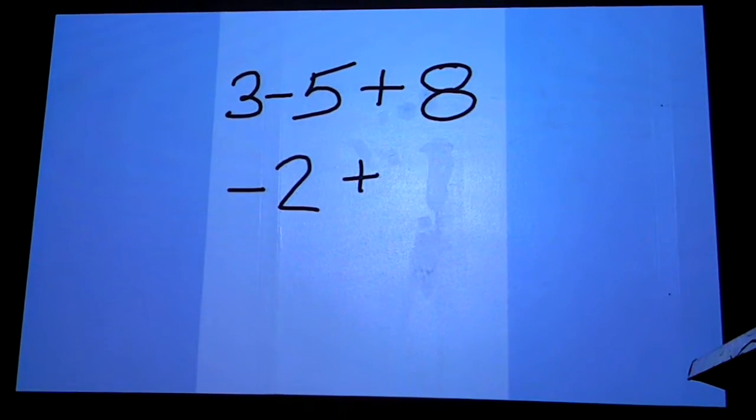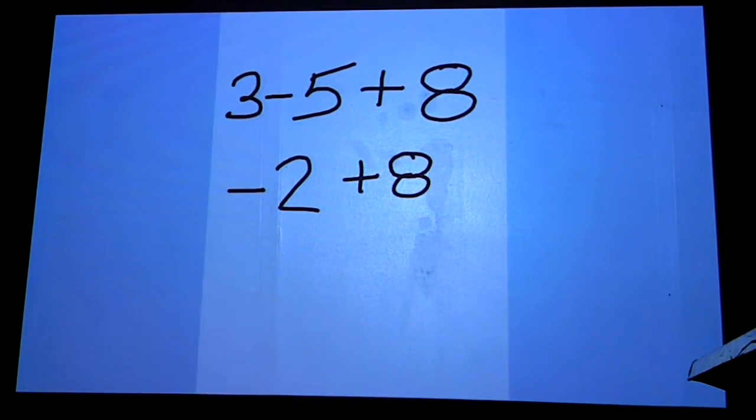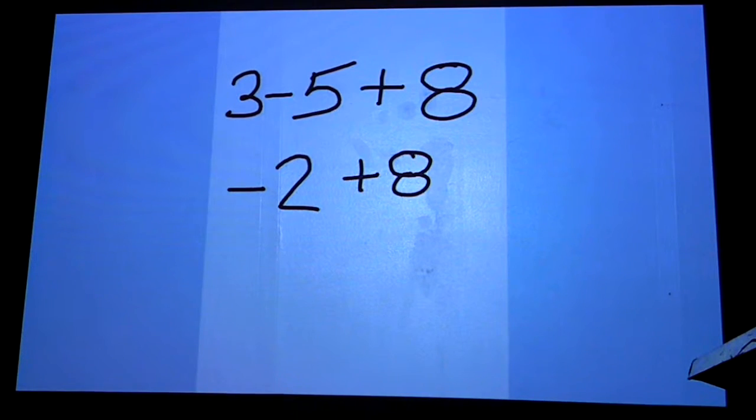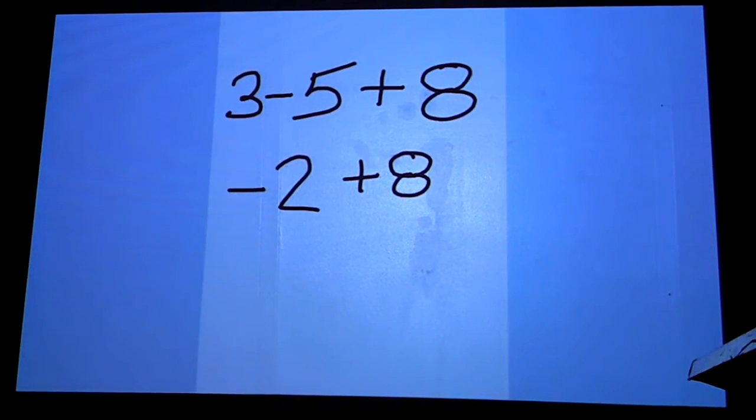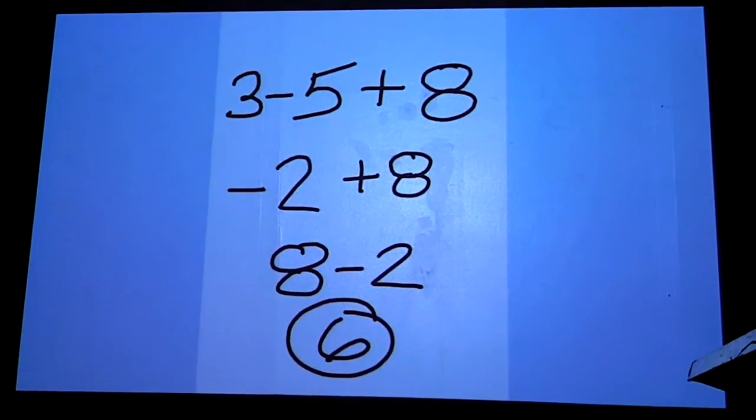Then you still have to add 8 to that. And if you're rusty on this part, here's an easy way to solve this. If you have a negative number plus a positive number like we have there, you can reverse that and make it 8 minus 2. And the final answer on that would be 6.